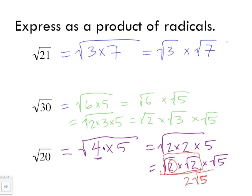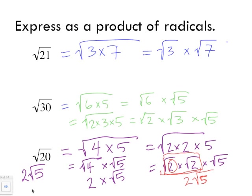Going back to the alternative method: simplify radical 20 as radical four multiplied by radical five. Find the square root of four, which equals two; that two gets multiplied by radical five to give two radical five. Either method gives the same final answer. When we have a whole number outside the radical symbol like this, this is what we call a mixed radical.